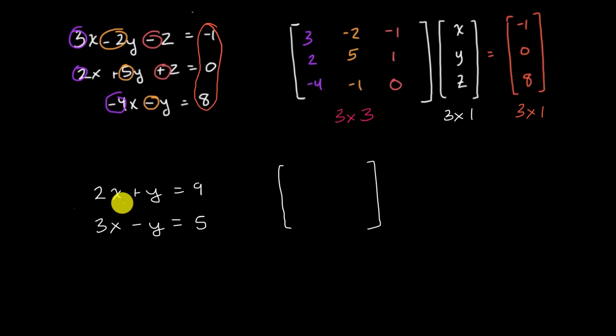So this is a system of two equations with two unknowns. So the matrix that represents the coefficients is going to be a two by two matrix. And then that's going to be multiplied by a vector that represents the unknown variables. We have two unknown variables over here. So this is going to be a two by one vector. And then that's going to be equal to a vector that represents the constants on the right-hand side. And obviously we have two of those. So that's going to be a two by one vector as well.